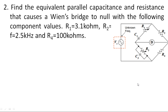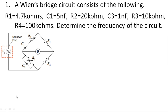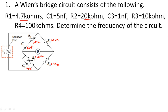Let us go with the first problem. A Wien bridge circuit consists of the following parameters: R1 = 4.7 kΩ, R2 = 20 kΩ, C1 = 5 nanofarads, C3 = 1 nanofarad, R3 = 10 kΩ, and R4 = 100 kΩ.